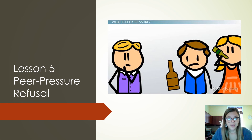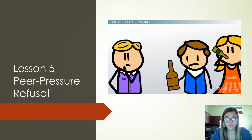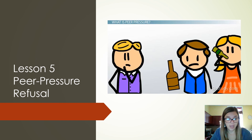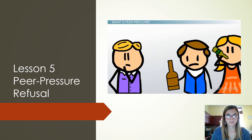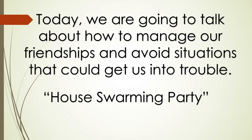So now what we're going to talk about is how to manage our friendships and avoid situations that could get us into trouble. We're going to read a little story called House Swarming Party, and we're going to follow a boy named Calvin and his friends.